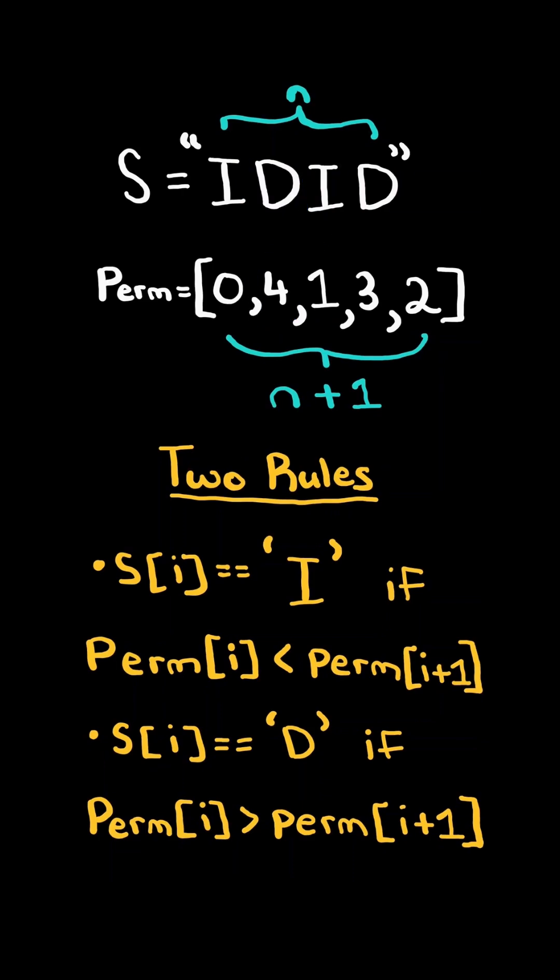Notice this is true for all characters. For example, if the character in the string is an I, then the same index in the permutation must be less than its next index. And if the character is a D, then the same index in the permutation must be greater than its next index. There can be many valid permutation arrays, but we just need to return one of them.